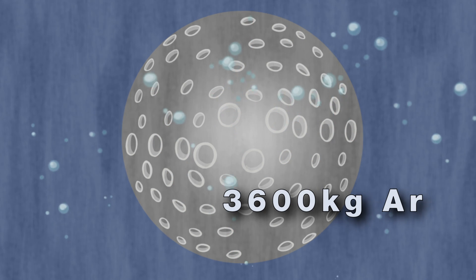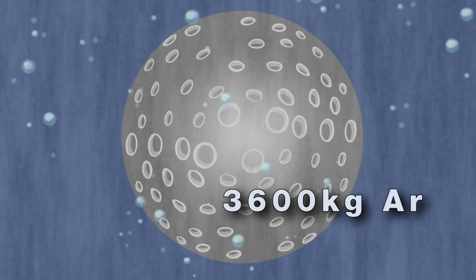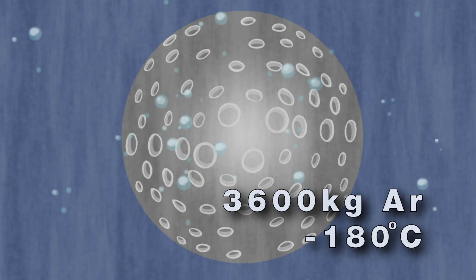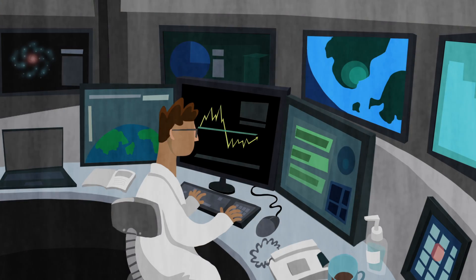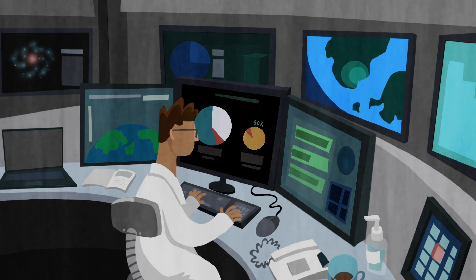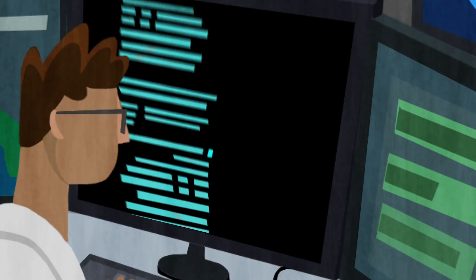It contains 3,600 kilograms of liquid argon, cooled to negative 180 degrees Celsius. Scientists continuously monitor this chamber from above ground, looking for a glimmer of light in the darkness.